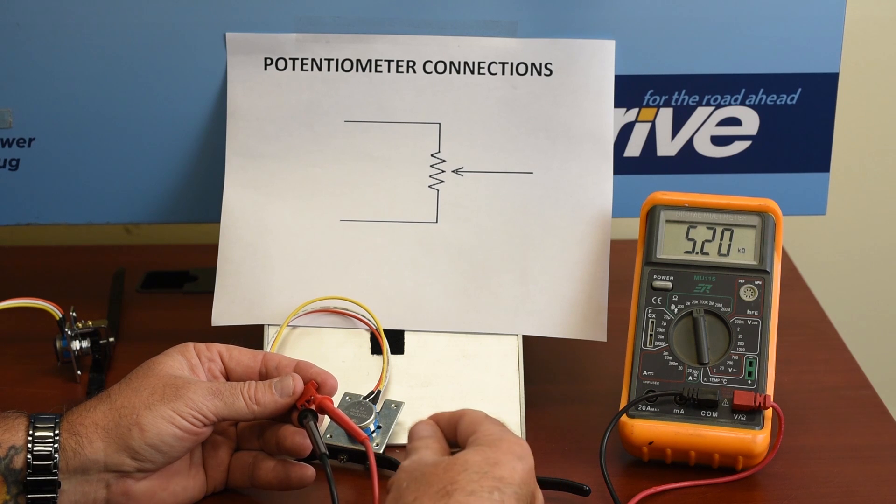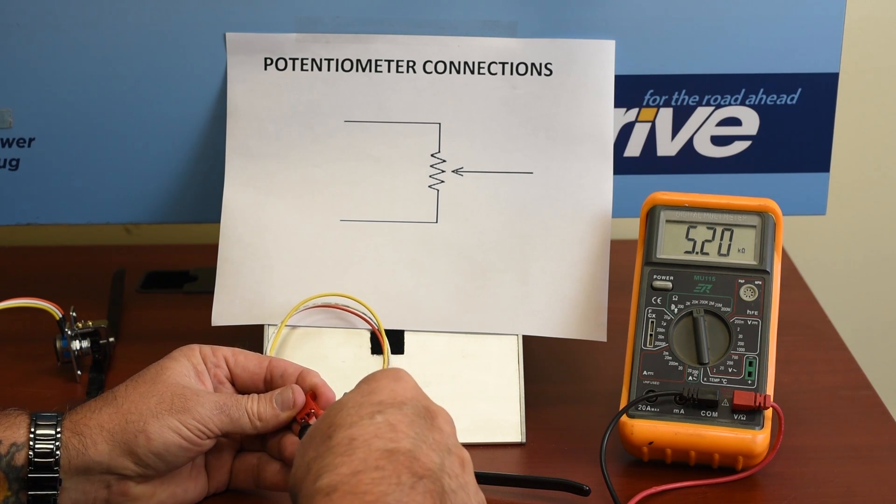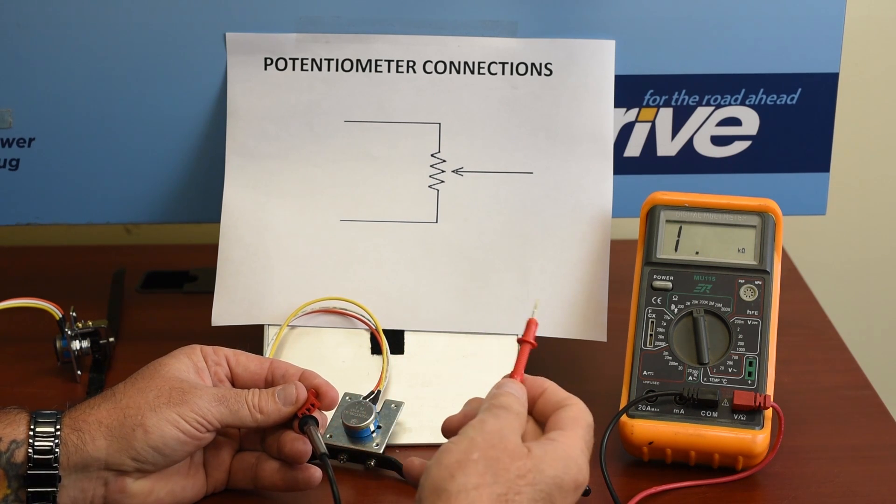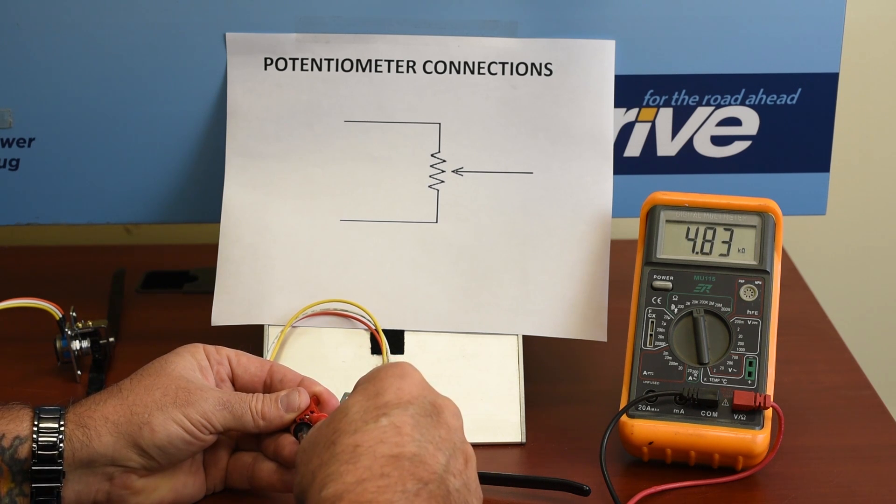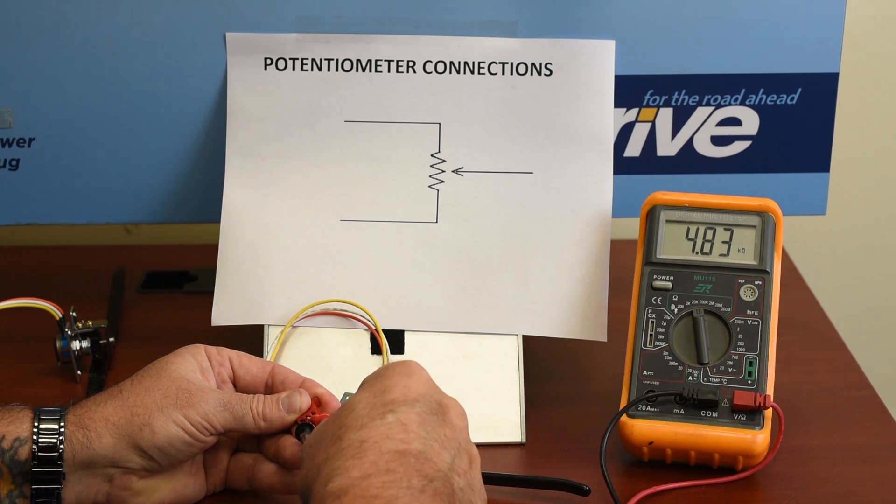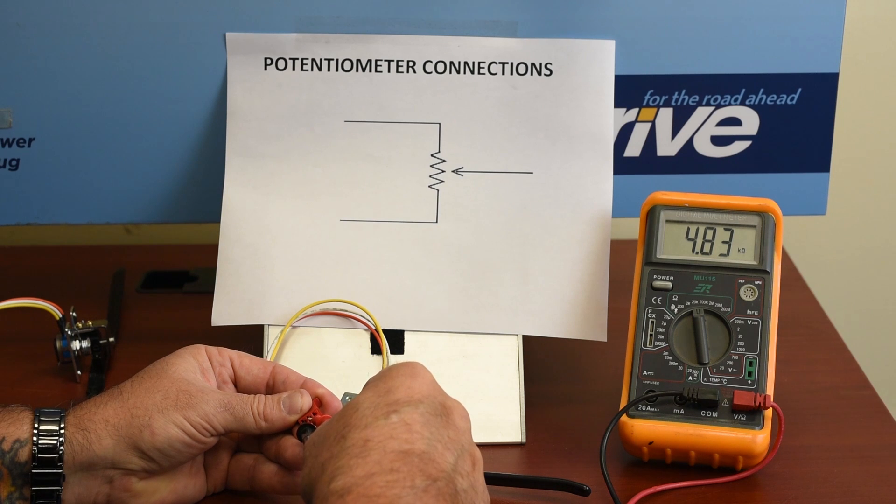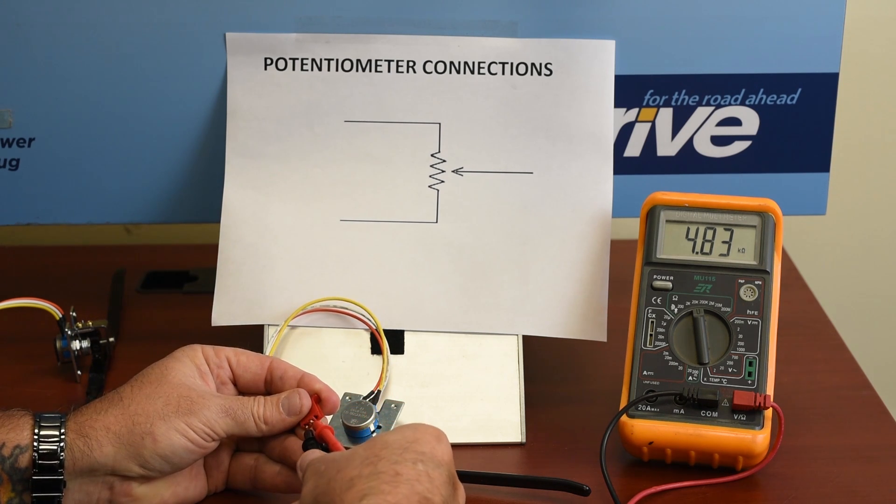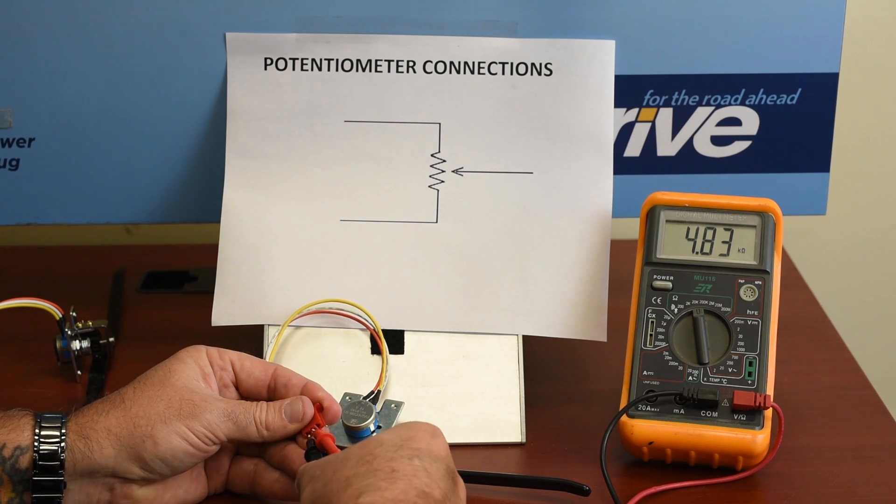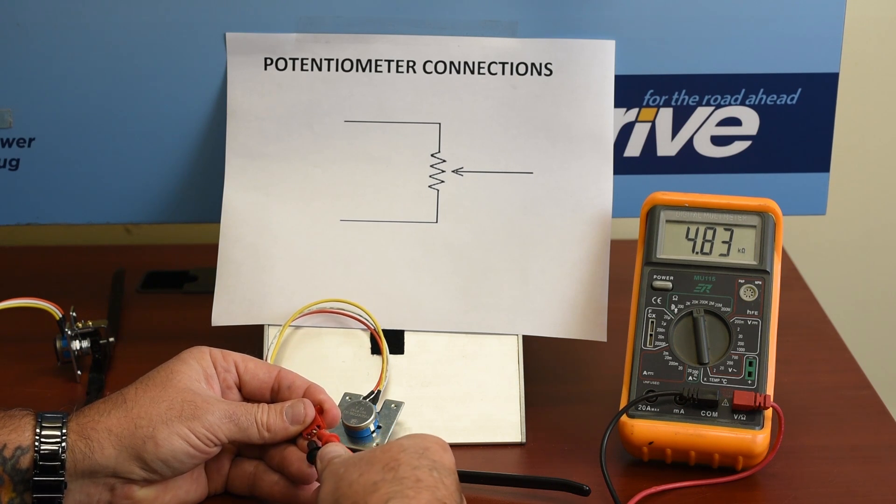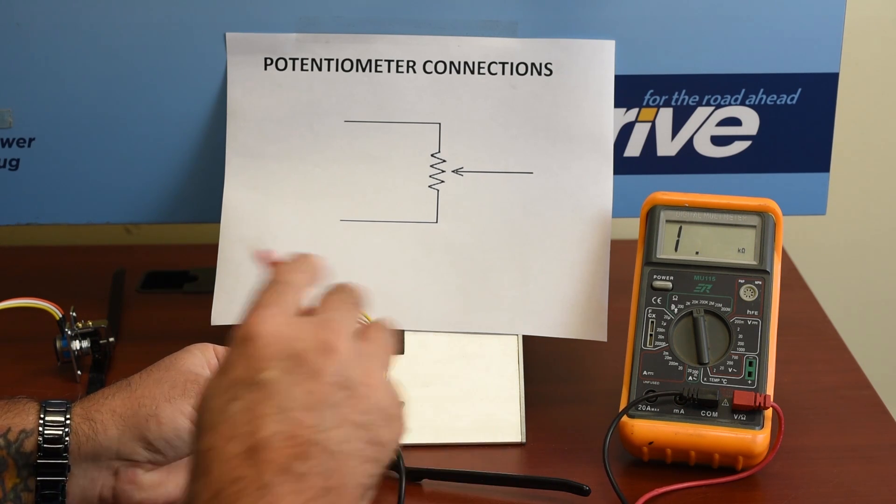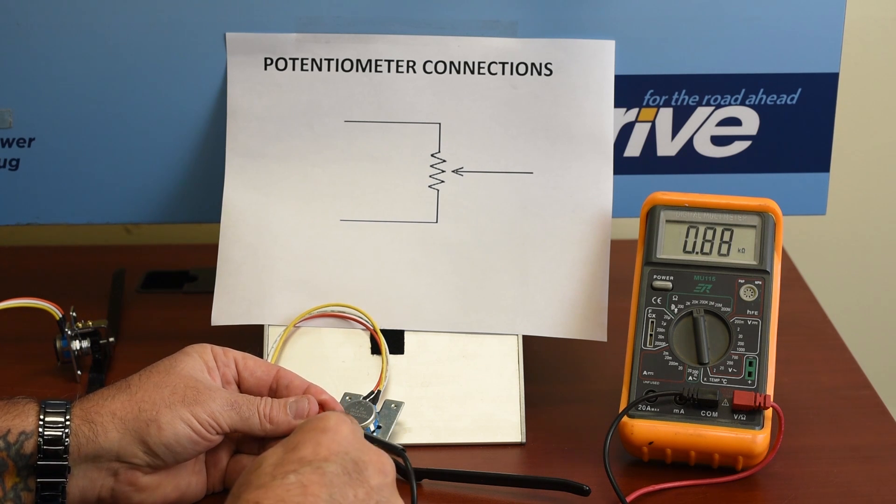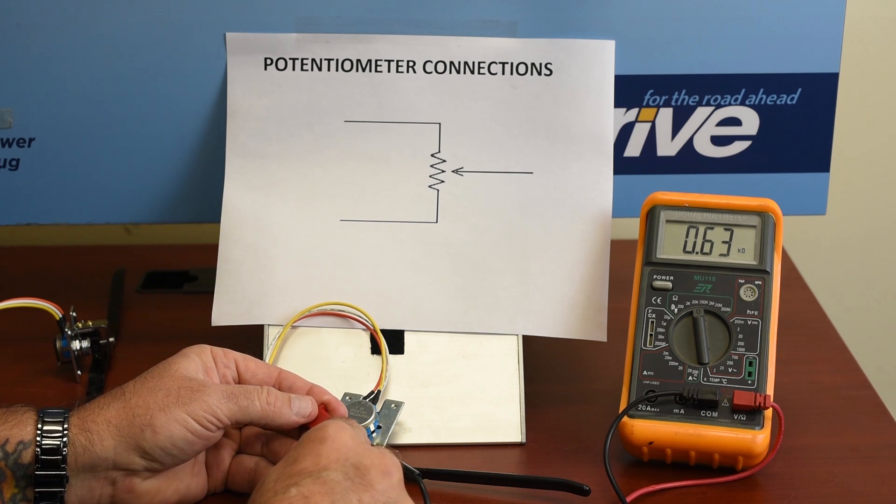So now the way we test it, remember, is to go from the outside to the middle. And we should get around half of that if it's a good pot. And we have 4.8K, which is way off balance. And so what we'll do there is we'll check the other outside to the middle and see what we get. Outside to middle. And we only get 0.63.